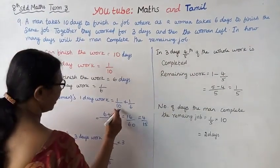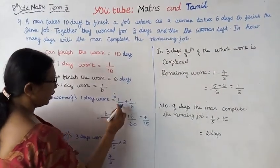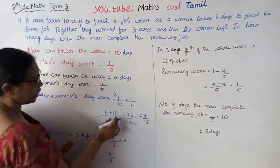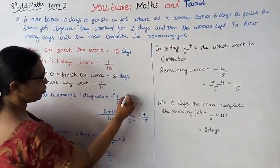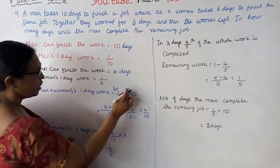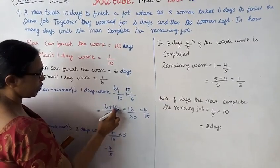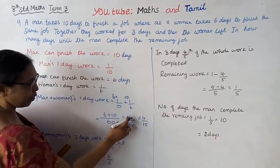The LCM of 10 and 6 is 60. 60 divided by 10 is 6, 60 divided by 6 is 10. So we have 6 plus 10 equals 16, giving us 16/60.